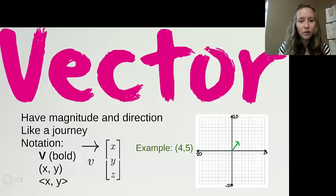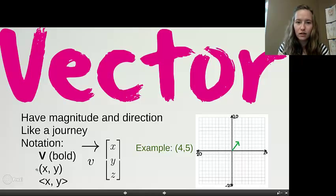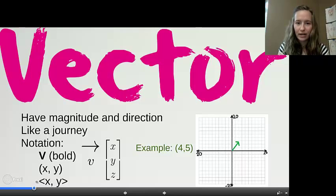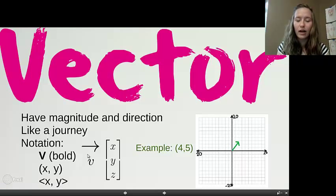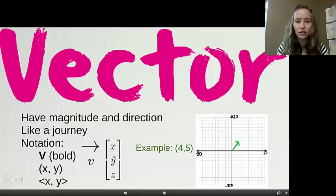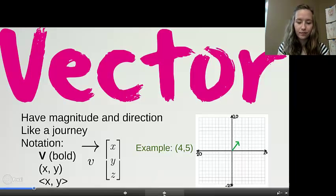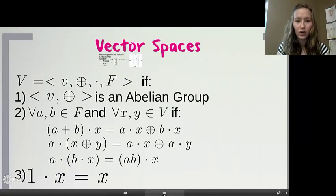There are several ways to write the notation for a vector: you can write it as a bold V, with parentheses, with caret signs on both sides, as a lowercase letter with an arrow above it, or as a matrix. One example is the vector (4, 5), shown in green on my graph. Again, a vector tells me where and how far to go.